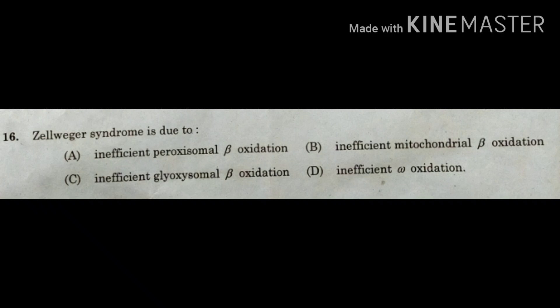Beta oxidation of fatty acid is the breakdown of fatty acid into two-carbon molecules, namely acetyl CoA. For example, if we break down a 16-carbon fatty acid — palmitic acid — the products will be a two-carbon acetyl CoA and the remaining 14-carbon fatty acyl CoA.